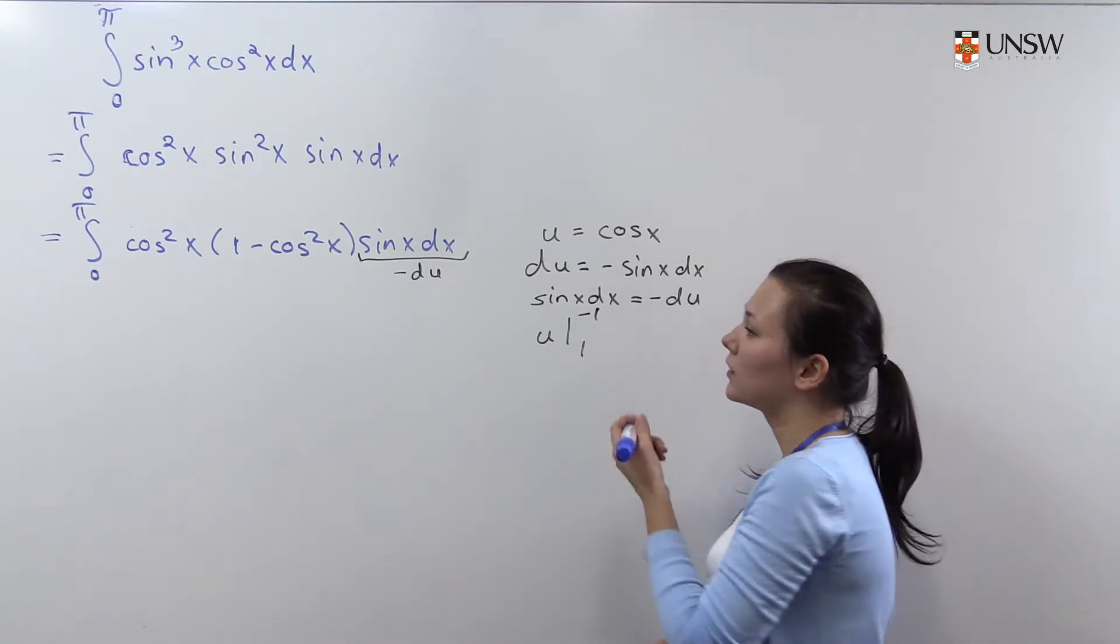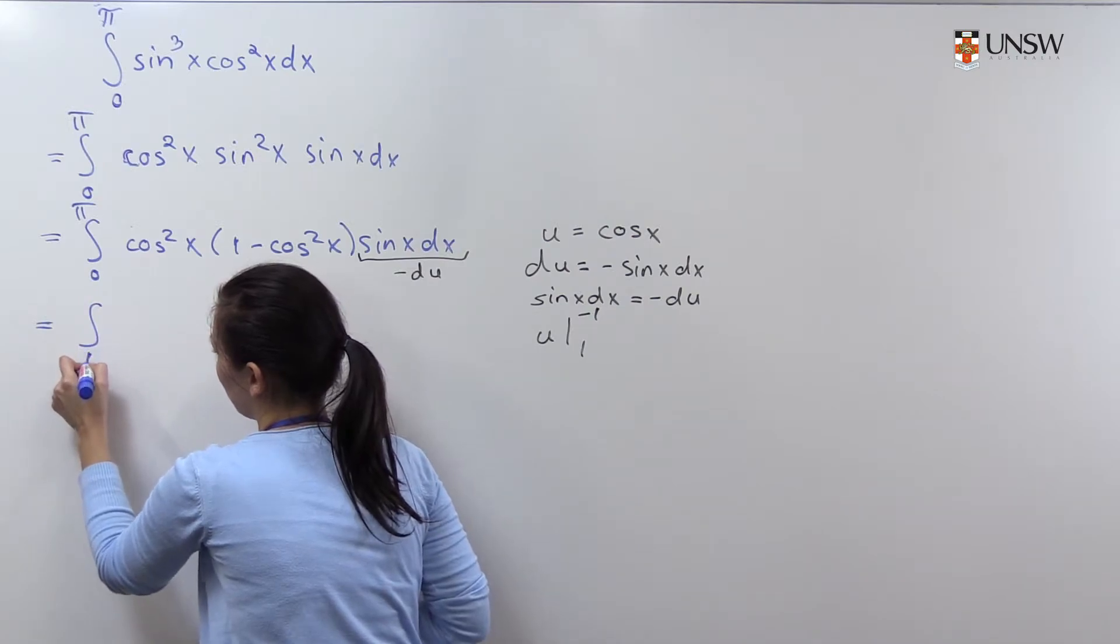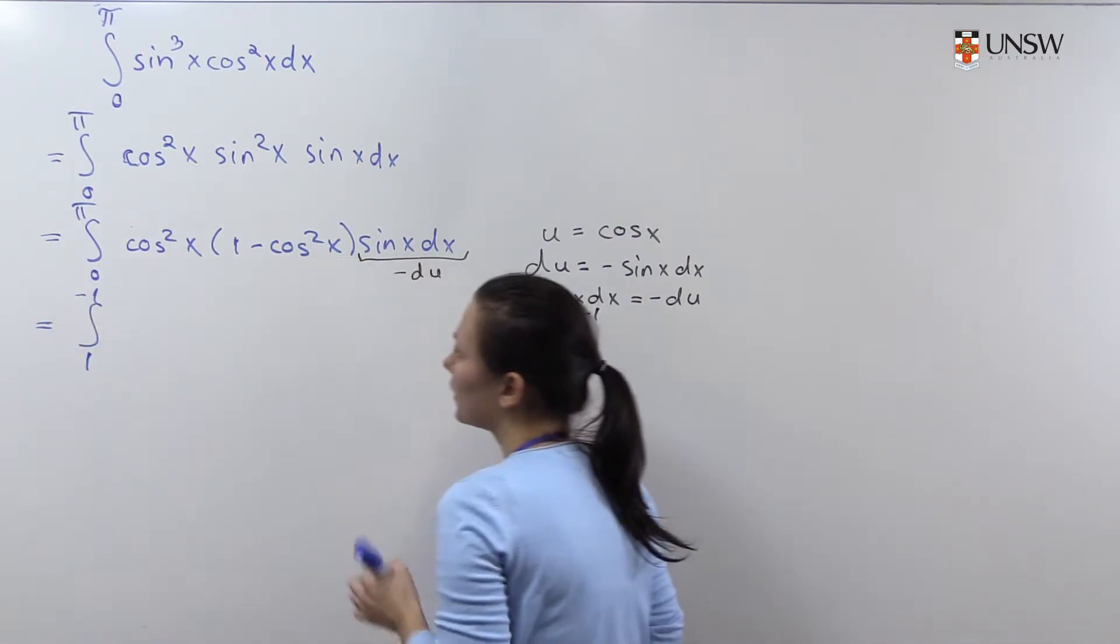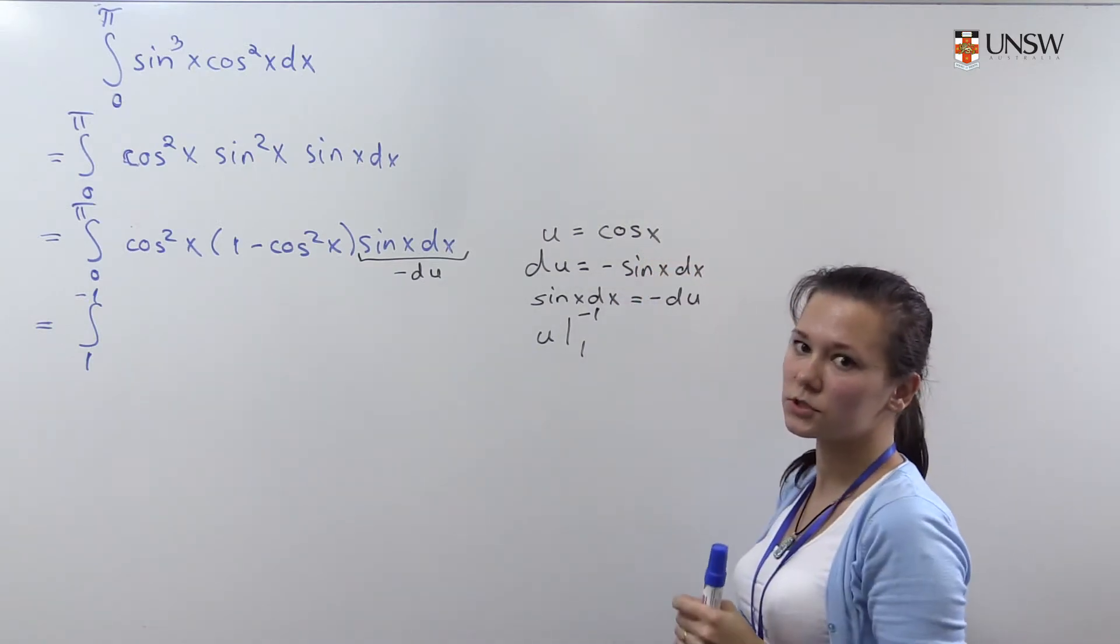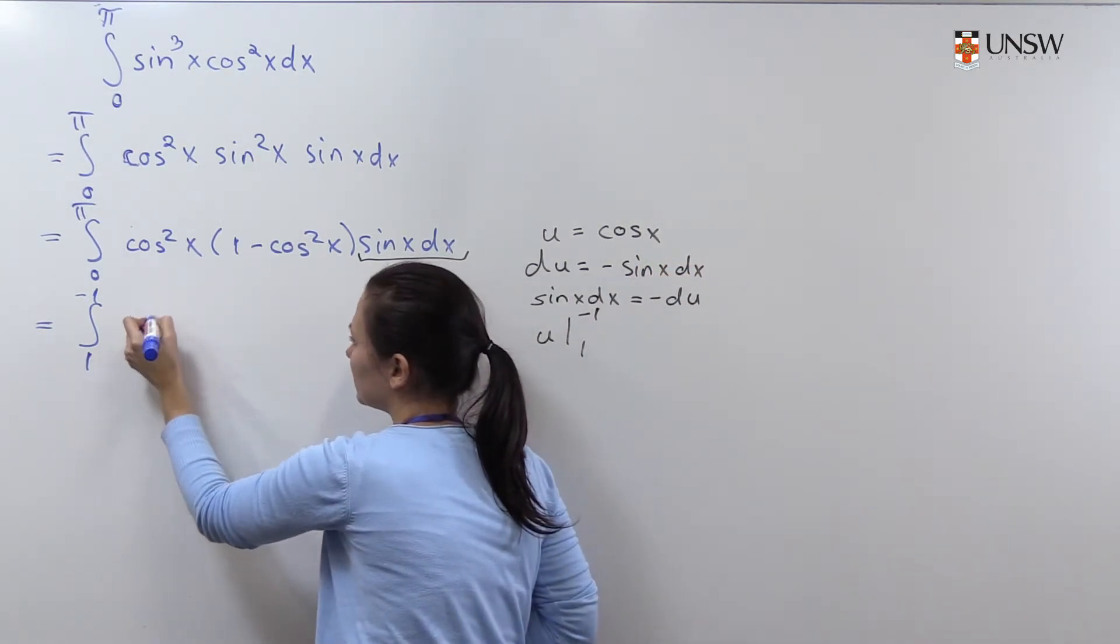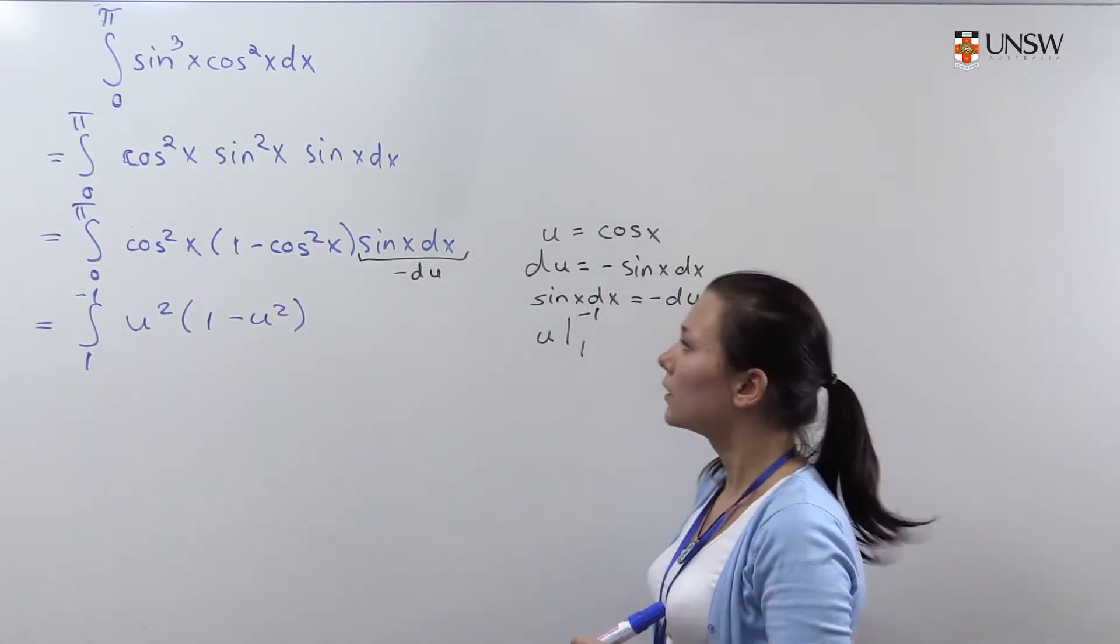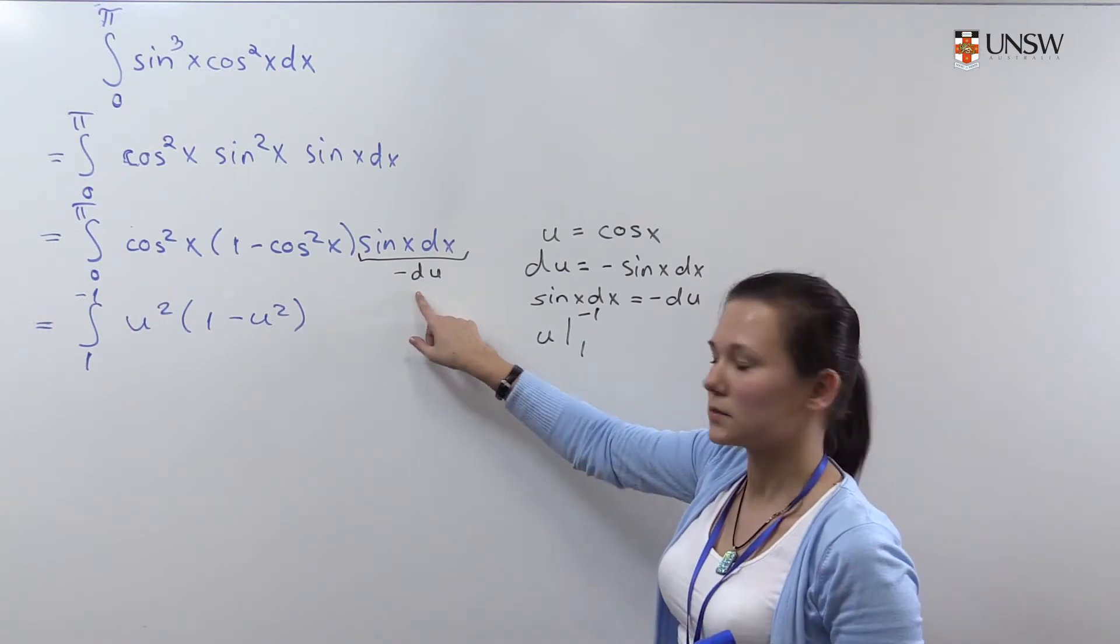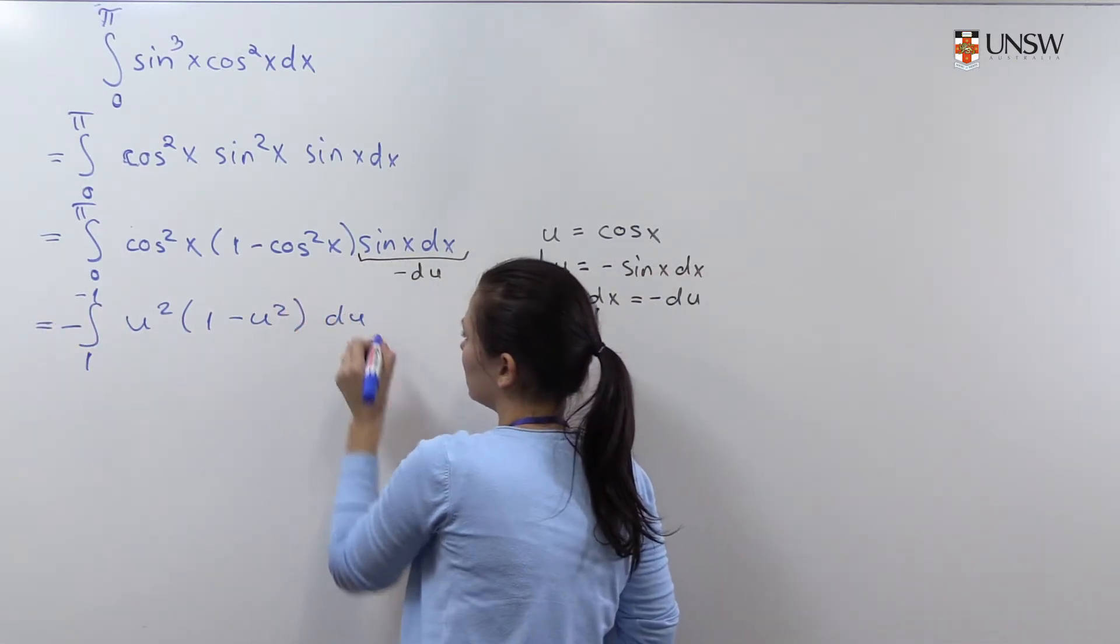Now we will substitute it into the integral. We will have the integral from 1 to minus 1. Cos squared of x will be by our substitution u squared, and here will be 1 minus u squared. This part is minus du, so we will have here minus du.